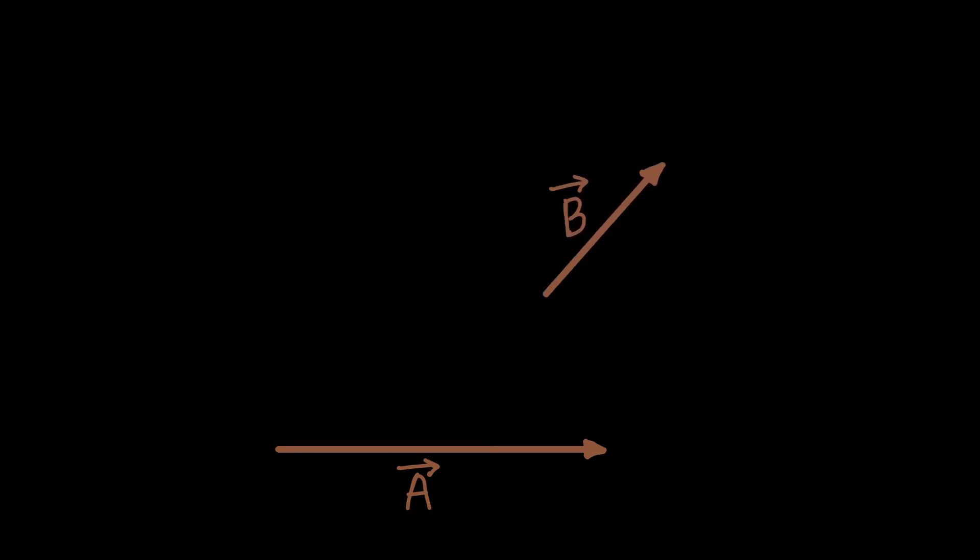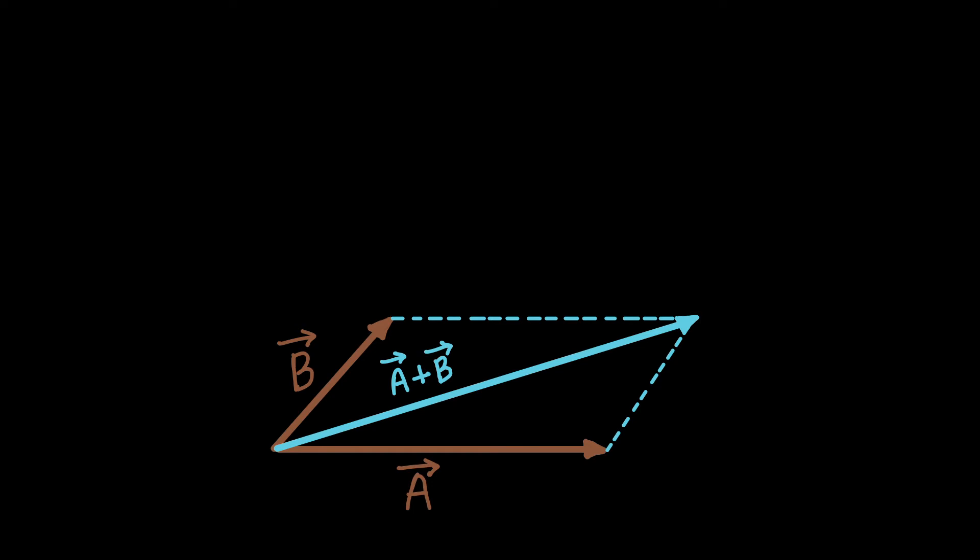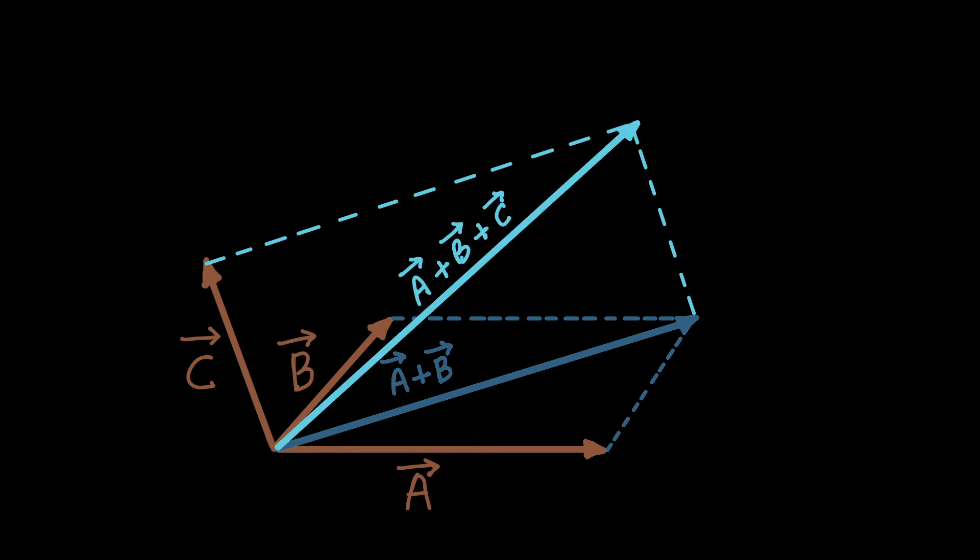If we join the tail of these two vectors, then to find the resultant of it, draw a parallelogram like this. Then the resultant vector will be the diagonal of the parallelogram. Put the tail of vector c over the tail of the resultant vector, then this will be our new resultant vector. If we keep on adding vectors like this, then this method is the parallelogram law of vector addition.